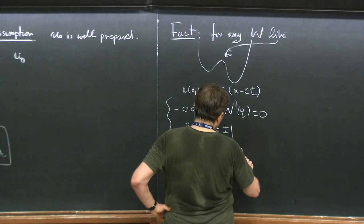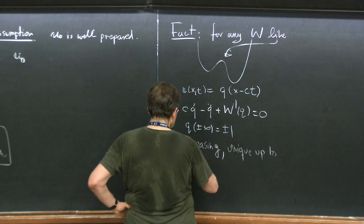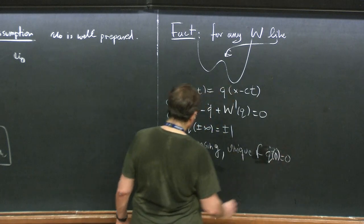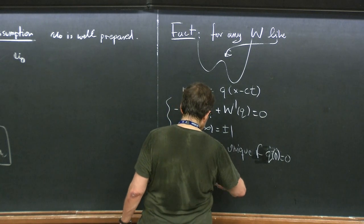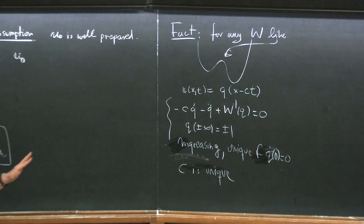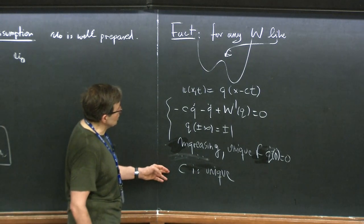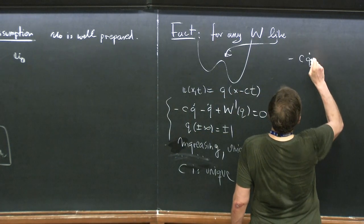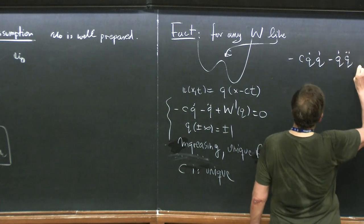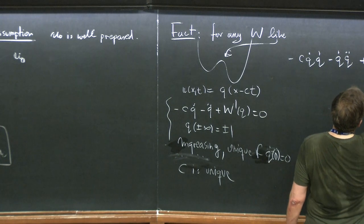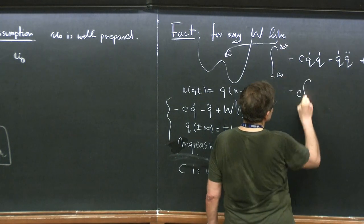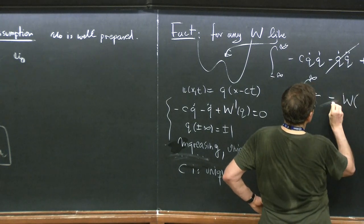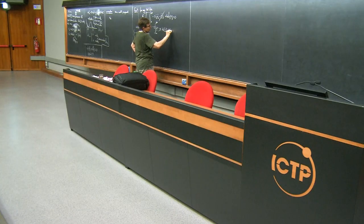It's unique up to translations. If we assume that Q of zero is zero, then C is unique. And in fact you can have an expression for C: if you multiply the equation by Q prime and integrate from minus infinity to infinity, from the first term you get minus C times the integral of Q prime squared. That goes away. And here you get W at 1 minus W at minus 1 equals zero. So the speed is exactly that ratio.